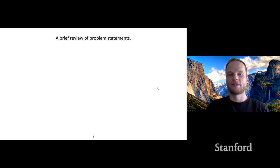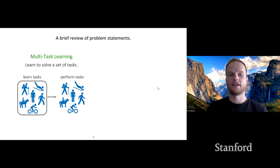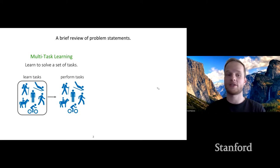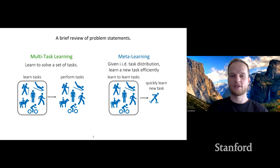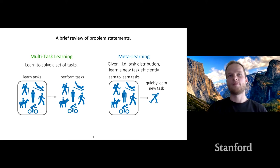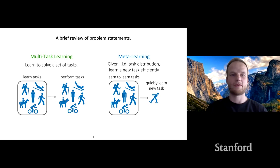I wanted to start with a brief review of the problem statements we've been considering. One was multitask learning: given a set of tasks up front, we train on them and are evaluated on those same tasks. Then there's the meta-learning problem statement, where we're given an IID task distribution and must learn a new task efficiently — learning how to learn quickly so that given a new task, we can quickly adjust to it.